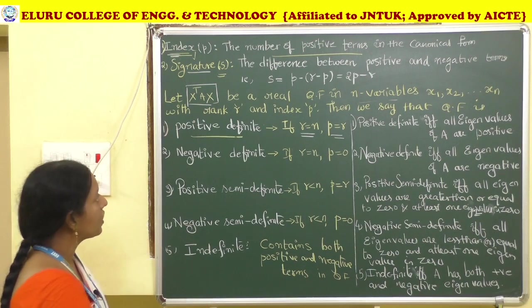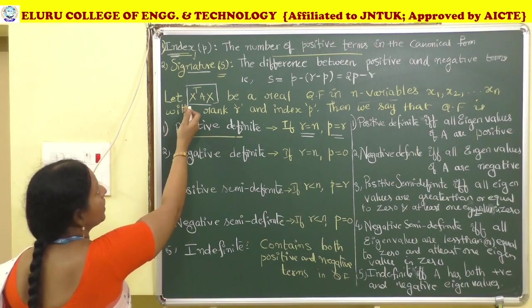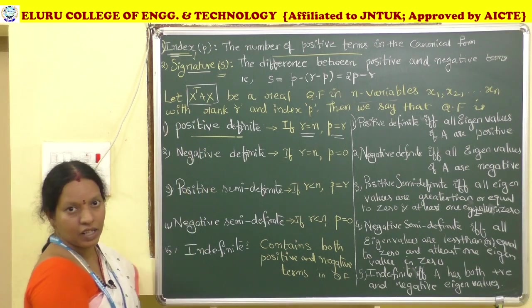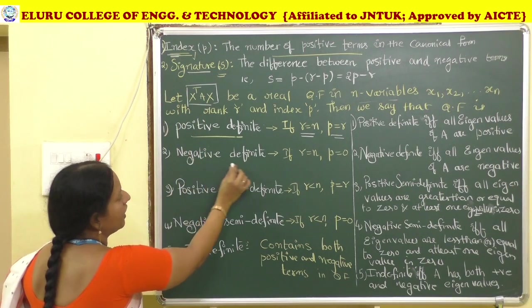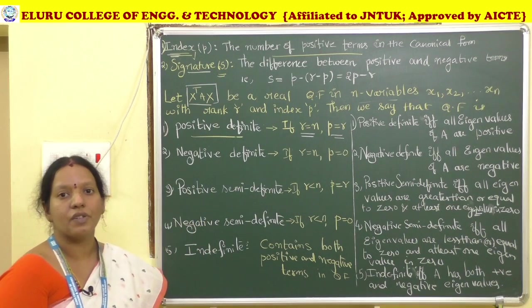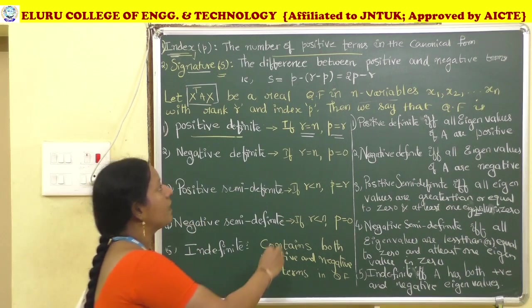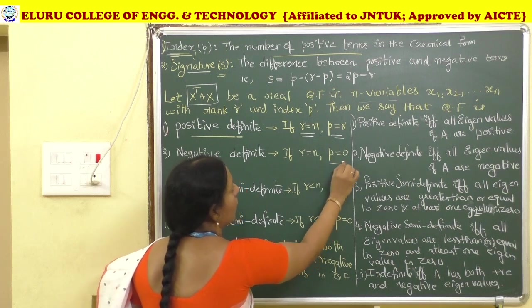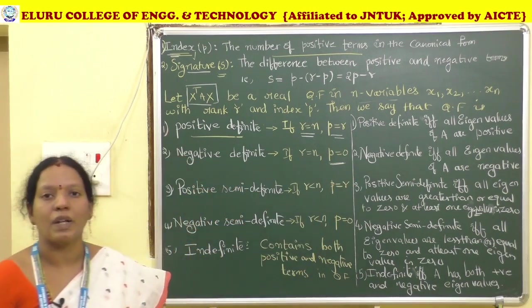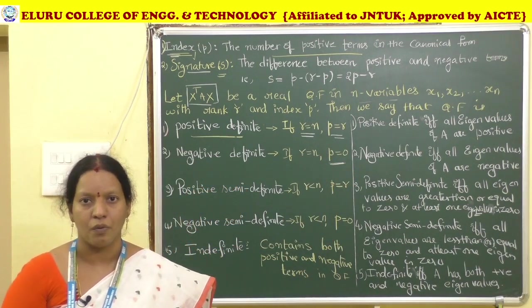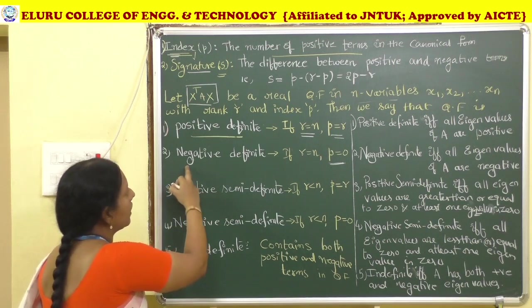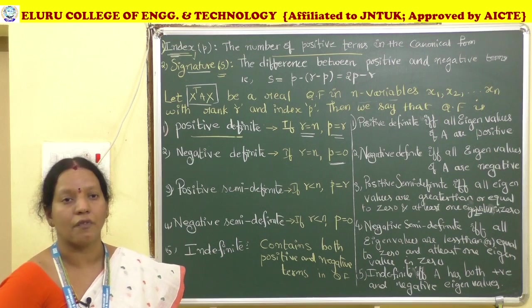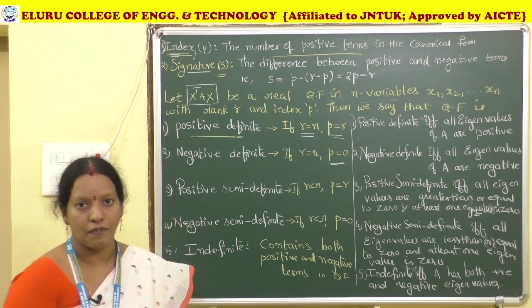The first form is by using index and signature. Positive definite: R equals n and P equals R. Negative definite: R equals n and P equals 0. P equals 0 means the number of positive terms is zero, so the given quadratic form is negative definite.